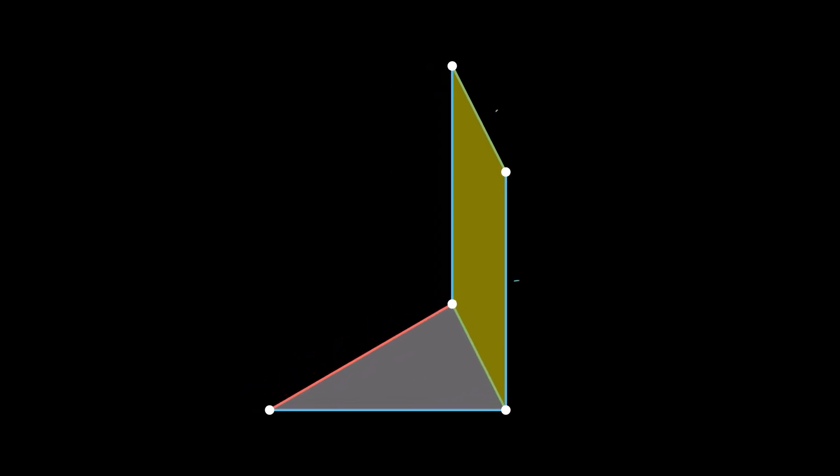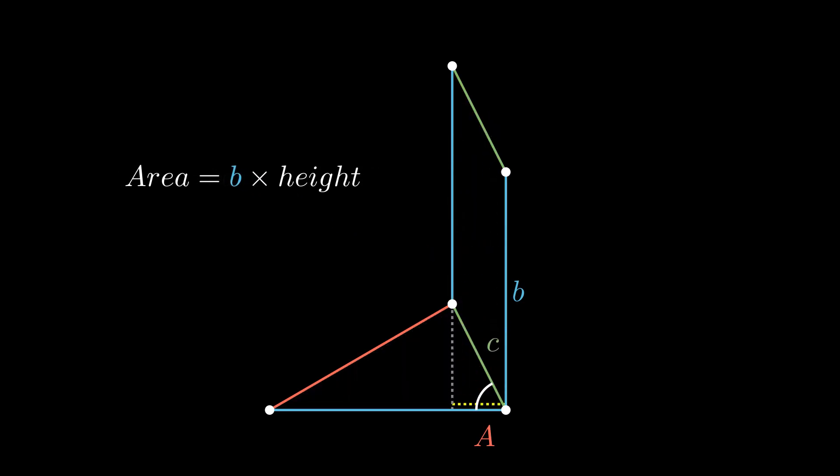Here it is in context. Its side lengths are b and c, and these two angles on the bottom right together form a quarter turn. Remember the parallelogram's area formula. Just like the rectangle, it's base times height. Here, the base is b, and the height is c times the cosine of the angle opposite to side a. The area is b c cosine a.